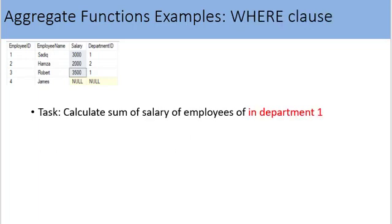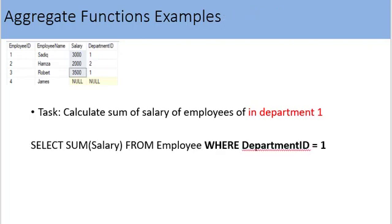So far we were using aggregate functions on all rows of a table, but we can use a WHERE clause to provide a condition for rows to be included in the aggregate. For example, to calculate the sum of salary for employees in department 1: SELECT SUM(salary) FROM employee WHERE department_id = 1. Only records of department 1 employees will be included in the aggregate. Please note: WHERE clause is applied before the aggregate functions — this point must be remembered.